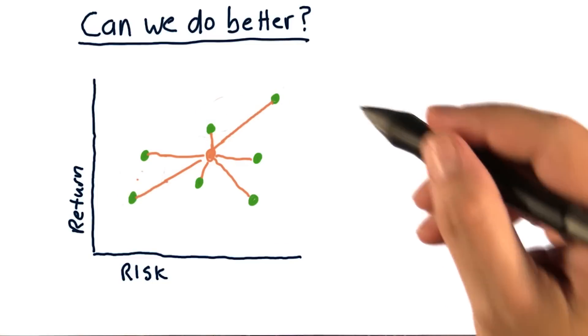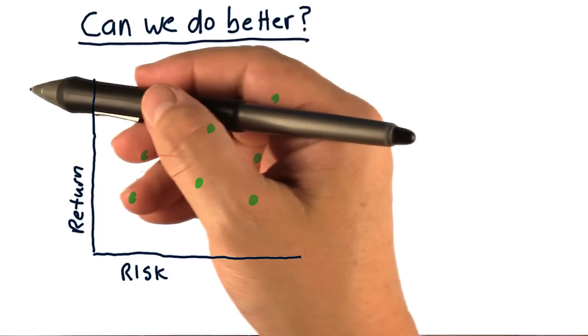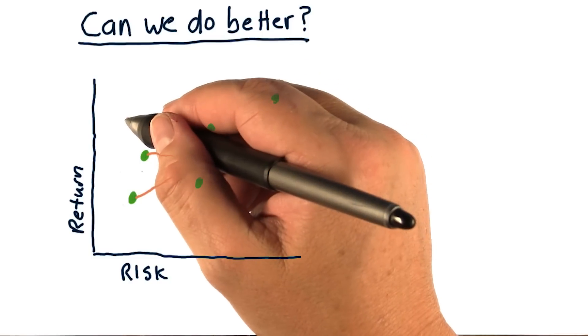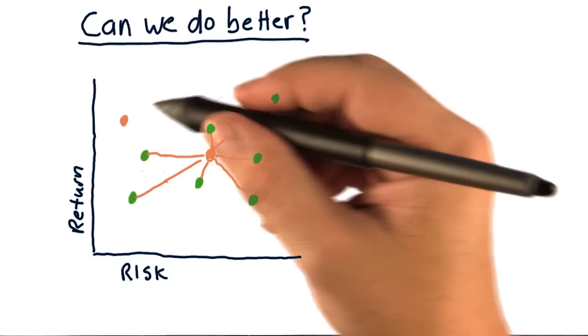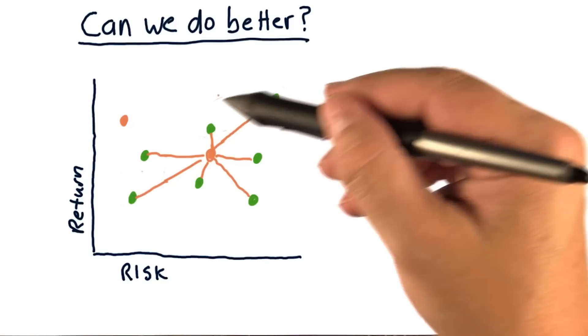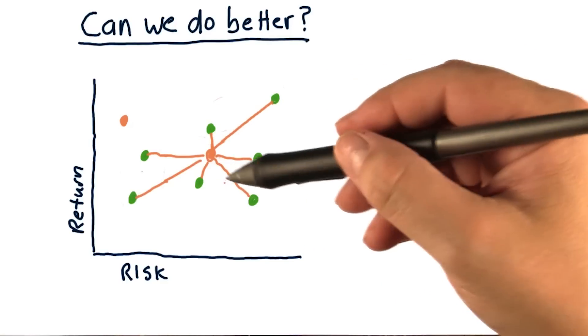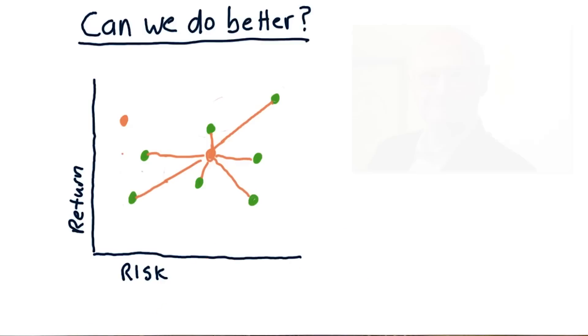Now, can we do better? In other words, is it possible to get portfolios over here? So can we have a portfolio here that has a return similar to these assets over here, but risk similar to these assets over here?